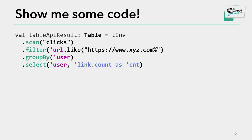Here is how a Table API query looks. Starting from a table environment, we call a method called scan, give it the name of a table, and do some filtering. The table is a clickstream table with common fields including a URL. We are only interested in URLs starting with www.xyz.com. After that we do a group by on the user who did the click, and then we count how many links this user clicked from that domain.